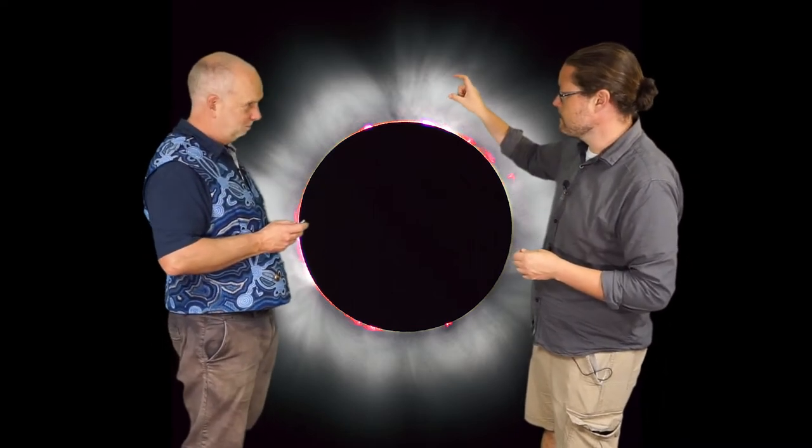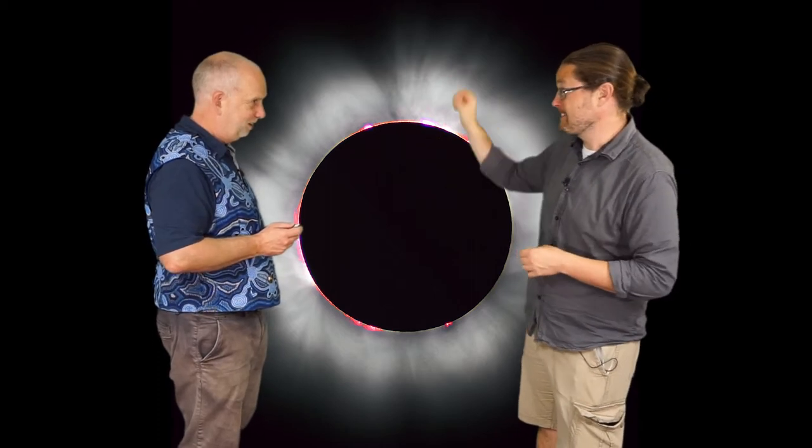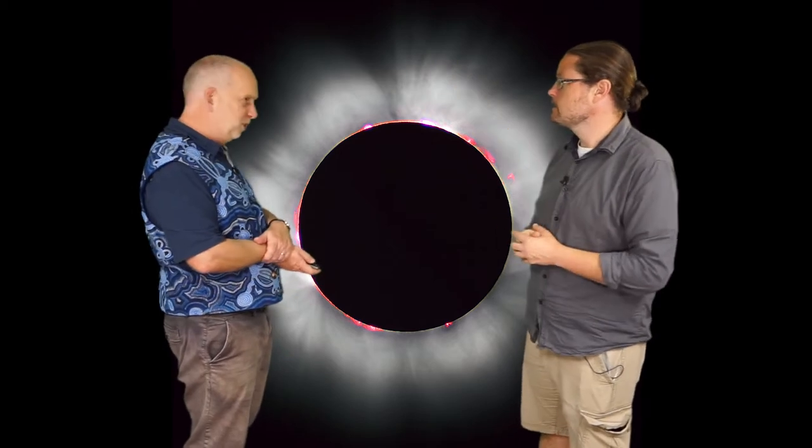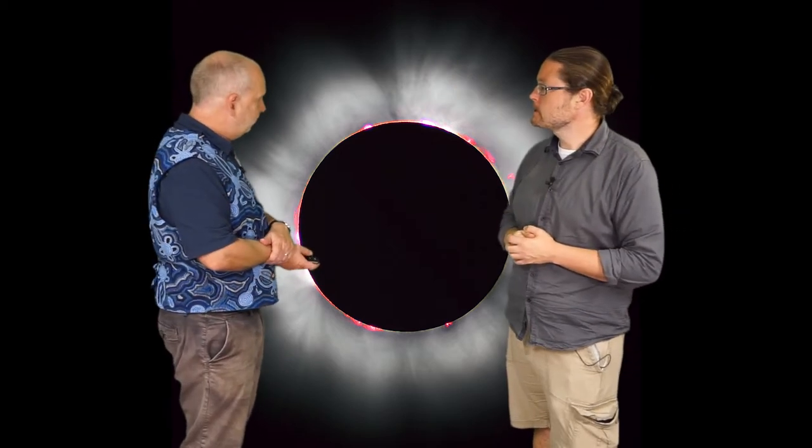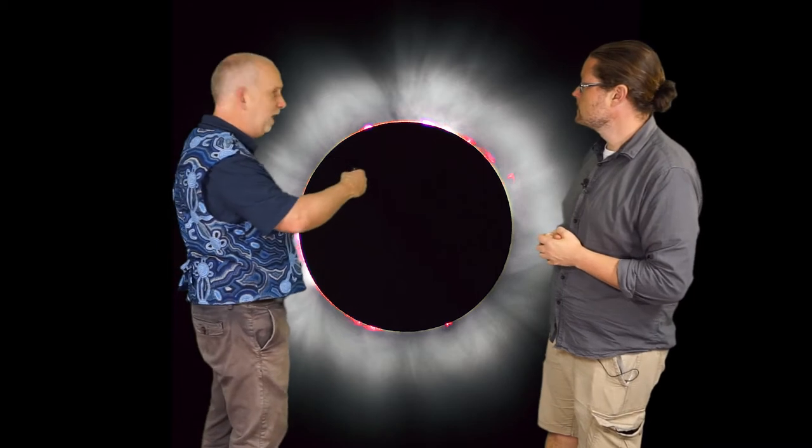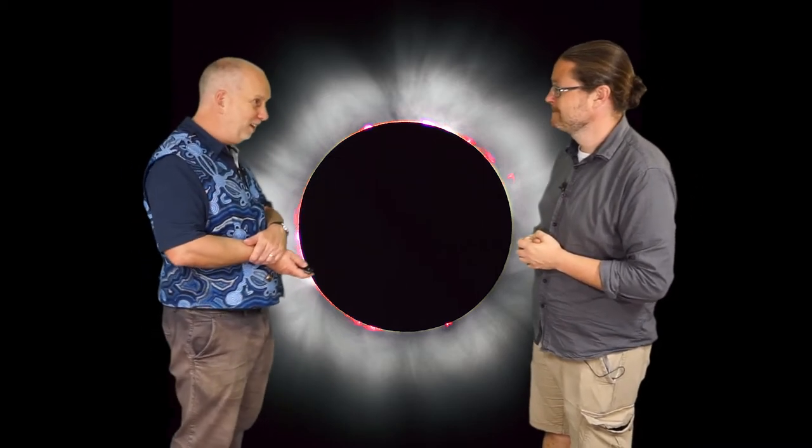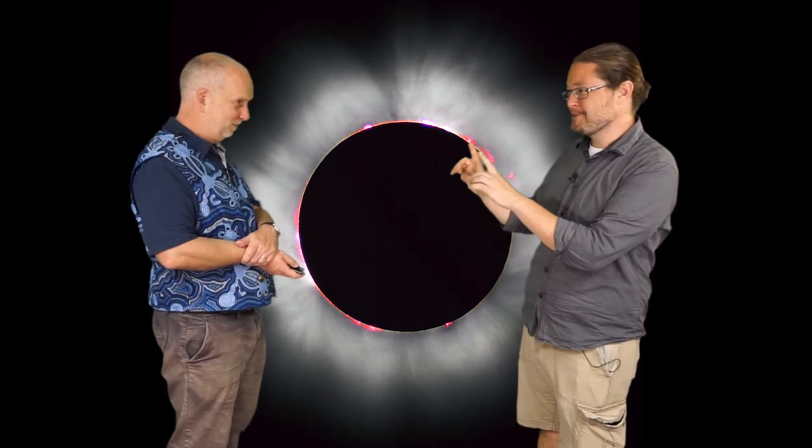And so this ring around it, sometimes they call it a ring of fire, is this outside of the sun that we normally can't see. Yeah, normally we're just dazzled by the photosphere. And you can see it's got two components. It's got the colored ring. And that's called the chromosphere from the Latin word for color. Not related to coronavirus.